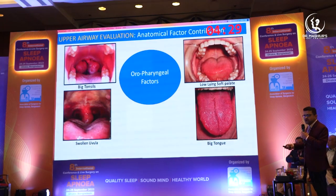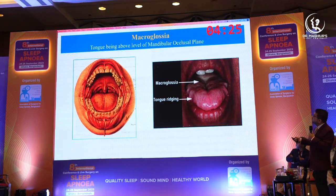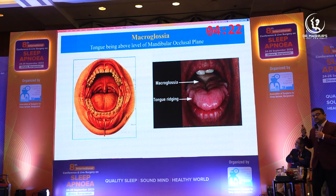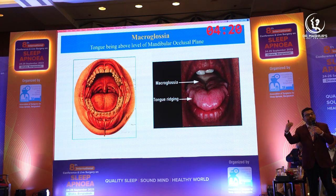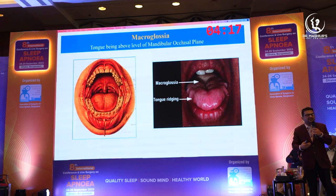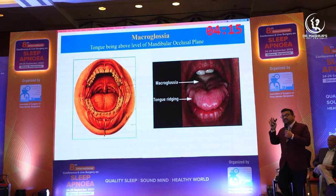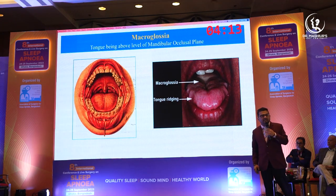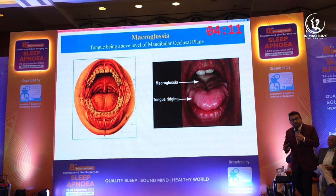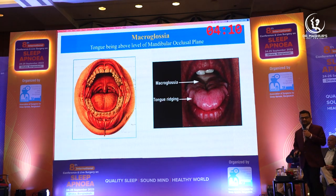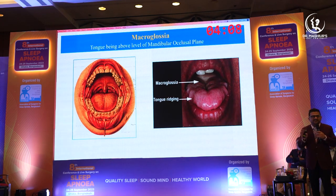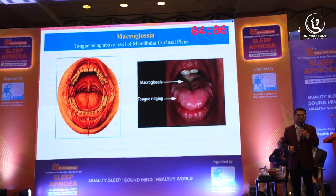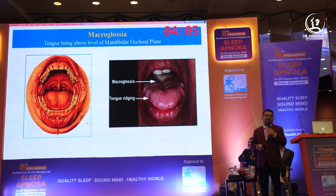We have to do something for the uvula also. We have to understand this phenotype. If you see a person with a lot of indentation markings in their tongue, we have to understand that this tongue is very big for the oral cavity, and we have to do something for it. Otherwise, septoplasty or tonsillectomy alone will not help in this group of patients.